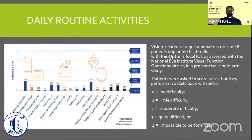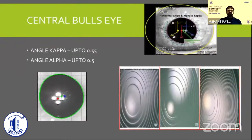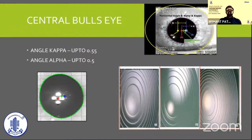FDA data from clinical studies using a National Eye Institute questionnaire graded difficulty across various activities, and the Panoptix IOL scored absolutely wonderfully on most of them. Another important feature: the central bullseye has increased from about 0.8–0.9 to 1.16 mm. This allows implantation in patients with higher angle alpha and kappa compared to traditional bifocals, reducing the red-flag threshold and increasing the number of patients who can receive this IOL.